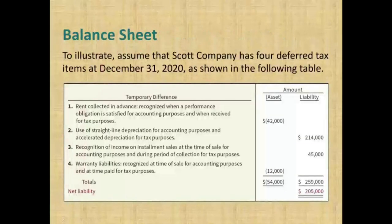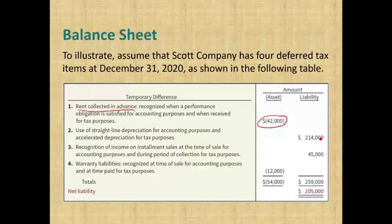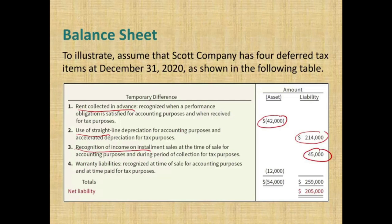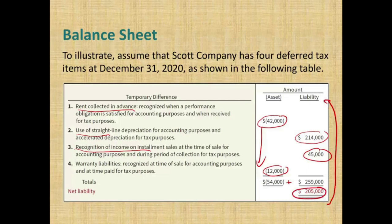Let me show you an example. Assume we end up with a deferred tax asset of $42,000 due to rent collected in advance, a $214,000 deferred tax liability due to the depreciation method used, a $45,000 liability from recognition of income on the installment sales method, and a deferred tax asset from a warranty liability. Adding them up: total deferred tax asset is $54,000 and total deferred tax liability is $259,000. We net them out — $259,000 minus $54,000 equals $205,000 of deferred tax liability, and it is always non-current. It used to be that we classified them as current and non-current, but that's no longer the case.